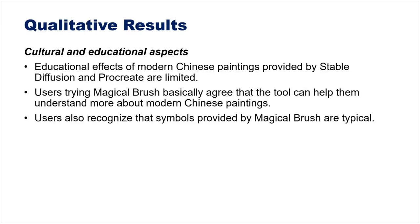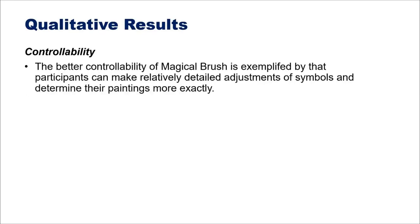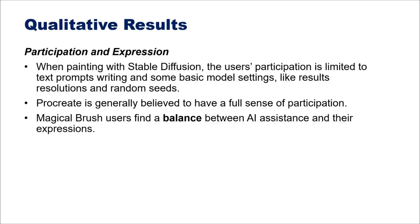In qualitative results, we found that the educational effects of modern Chinese paintings provided by Stable Diffusion and Procreate are limited, and users who tried Magical Brush basically agree that the tool helps them understand more about modern Chinese paintings. In controllability, Magical Brush users can make relatively detailed adjustments of symbols and determine their paintings more exactly. In participation and expression, Stable Diffusion users' participation is limited to text prompt writing and some basic model settings like result resolution and random seeds, while Procreate is generally believed to provide a full sense of participation. Magical Brush users find a balance between AI assistance and their own expression.